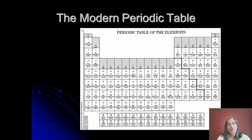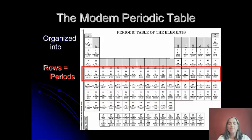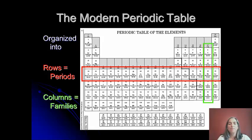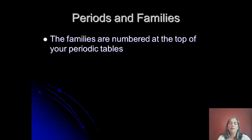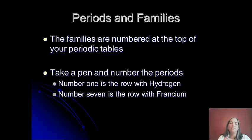Here's the modern periodic table. It's organized into rows, which are called periods — that's the name 'periodic table' — and columns, which are called families. The families are numbered at the top: group 1, 2, 3, all the way through 18. For the periods, number 1 is the row with hydrogen and number 7 is the row with francium. Go ahead and put those numbers on the left-hand side of your periodic table so you'll have them when using it.